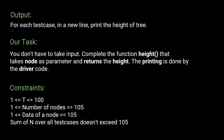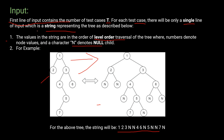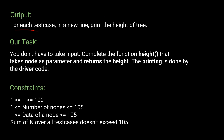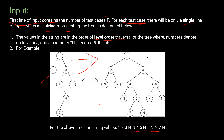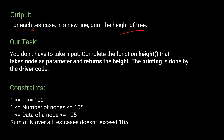For each test case we have to print the height of the tree. In the previous example the height would be 5. Our task is only to complete the height function, which finds the height of the tree and takes a node as a parameter and returns the height. The input/output and printing are handled by the driver code.